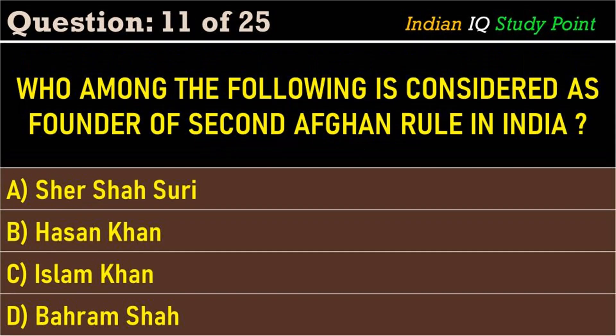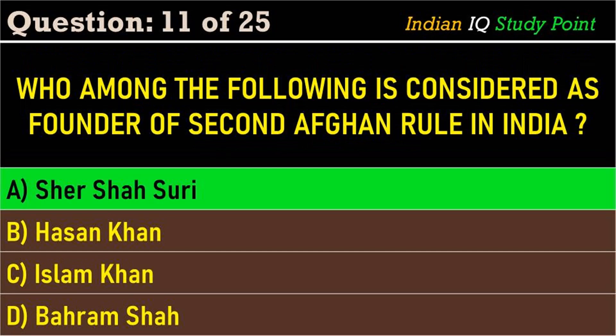Coming to the next question: who among the following is considered the founder of second Afghan rule in India? Option A. Sher Shah Suri, B. Hassan Khan, C. Islam Khan, D. Bahram Shah. And the correct answer is Option A. Sher Shah Suri.